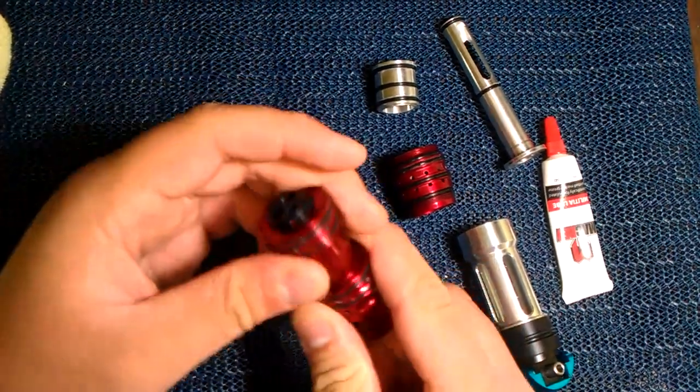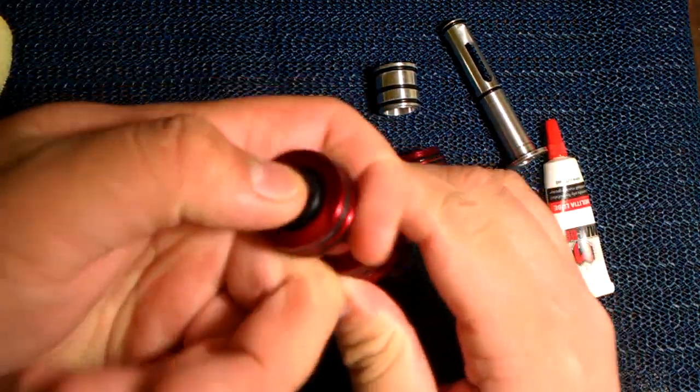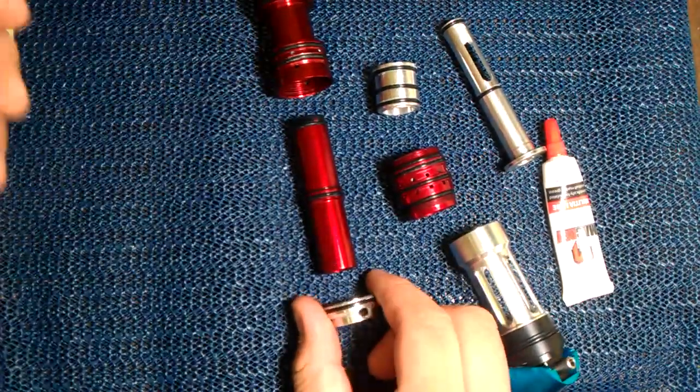You don't have to take off this o-ring at the tip here. You just push it through. And then, here's all your pieces to the clone.